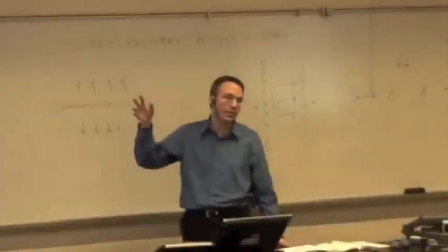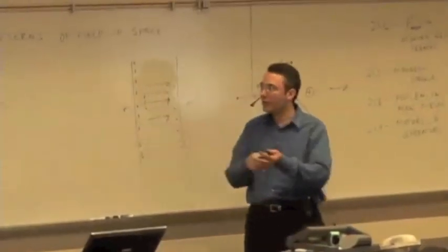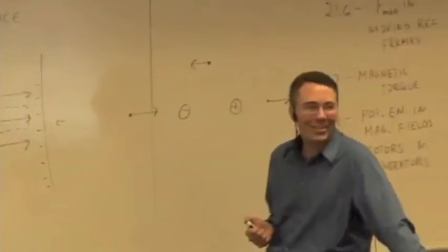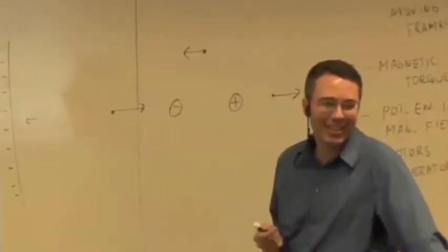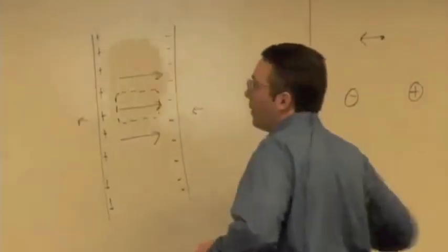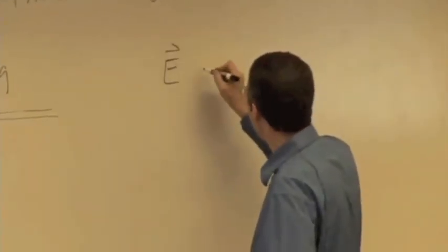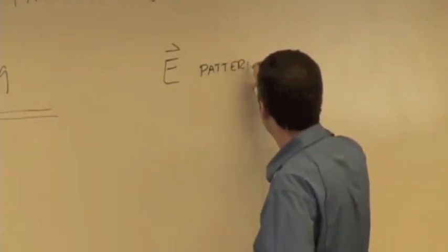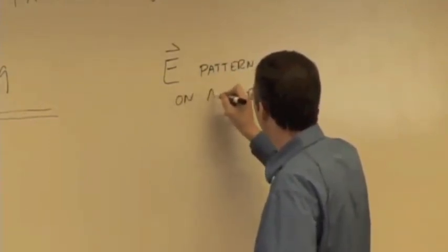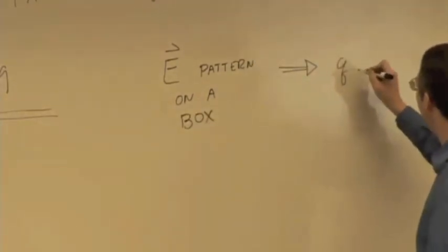The basic idea is that we want to relate these various patterns of electric field in space around a closed surface — we're just using a box here — to the amount of charge inside this closed surface. Somehow, the electric field pattern on a box, or just any closed surface, tells us something about the charge inside.